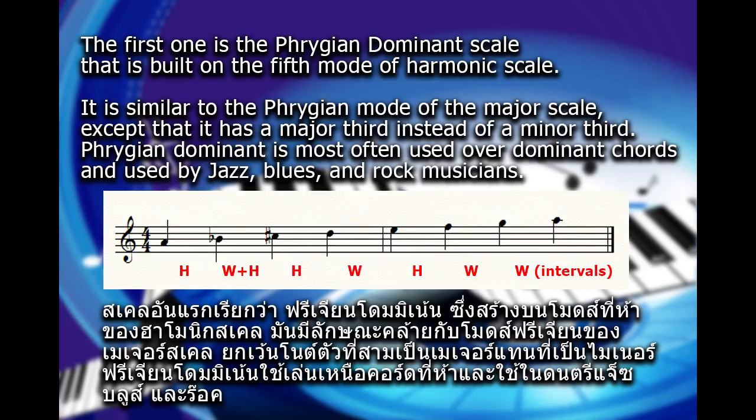The first one is the Phrygian dominant scale, built on the fifth mode of the harmonic minor scale. It is similar to the Phrygian mode of the major scale, except that it has a major third instead of a minor third. Phrygian dominant is most often used over dominant chords, and is used by jazz, blues, and rock musicians.